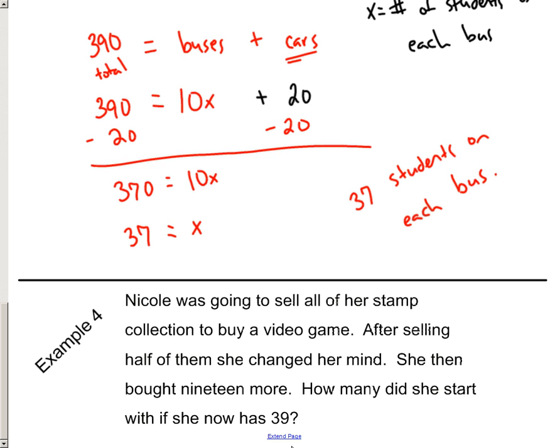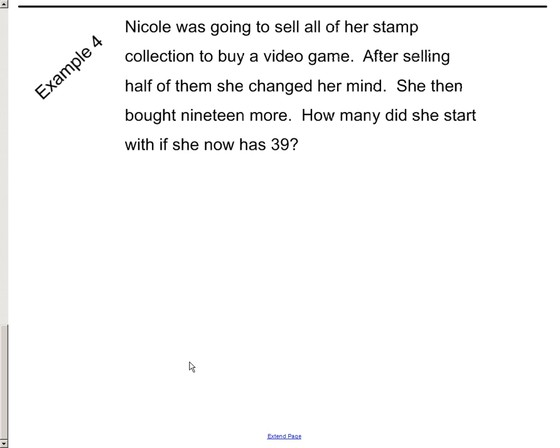Let's take a look at the very last one. And I like this one because any time that you throw in an equation like this or a story problem like this, it usually causes some issues. People know the answer. They can figure out the answer. But trying to write the equation becomes a little bit difficult. Nicole is going to sell all of her stamp collection to buy a video game. And after selling half of them, she decided, well, I don't want to sell them anymore. So then, instead of selling the rest of it, she decided to buy nineteen more. How many did she start with if she's now got thirty-nine?